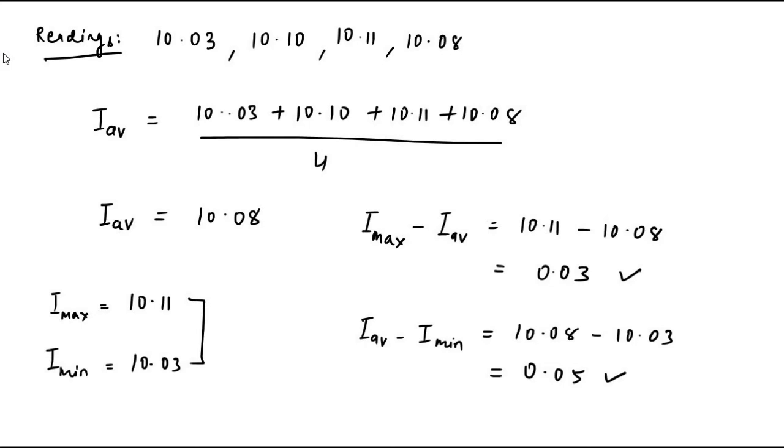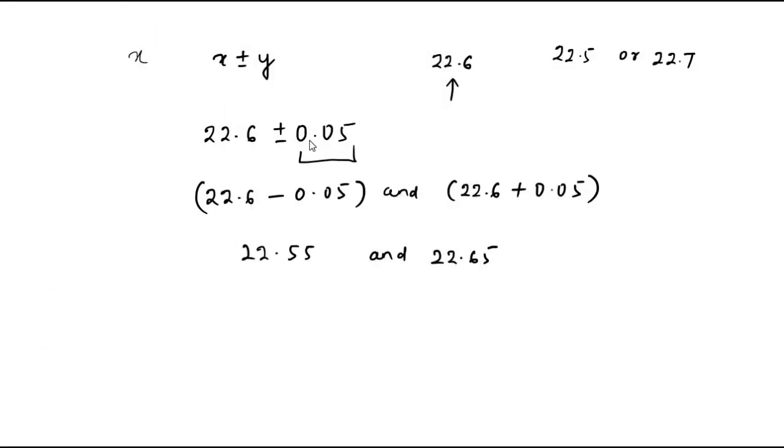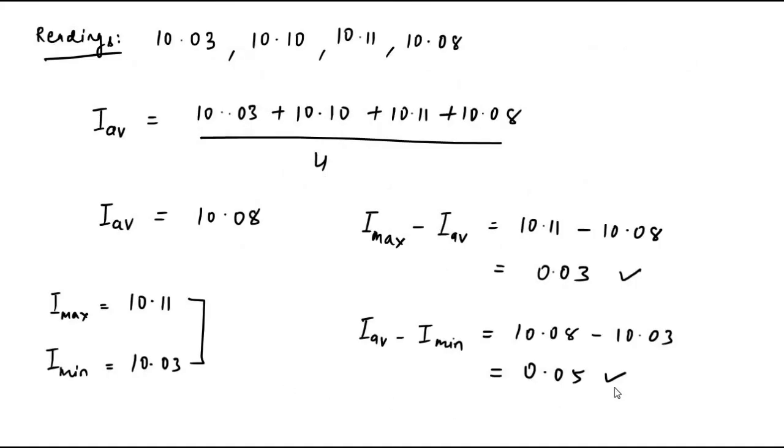The average error or deviation, this plus minus thing which we are talking about here, we can calculate as the average of these two, the maximum deviation from the maximum reading and the average, and then the separation between the minimum and the average reading. So simply 0.03 plus 0.05 divided by 2, which is 0.08 by 2, which is 0.04. So the average error range is plus minus 0.04 taken from the average value, the mean value. This is the fluctuation range.